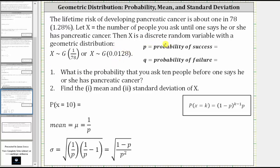Where p is the probability of success, which in this case is the probability someone has pancreatic cancer, which is 1/78. q is equal to one minus p, or the probability of failure, which in this case is the probability someone does not have pancreatic cancer, which is one minus 1/78, or 77/78.